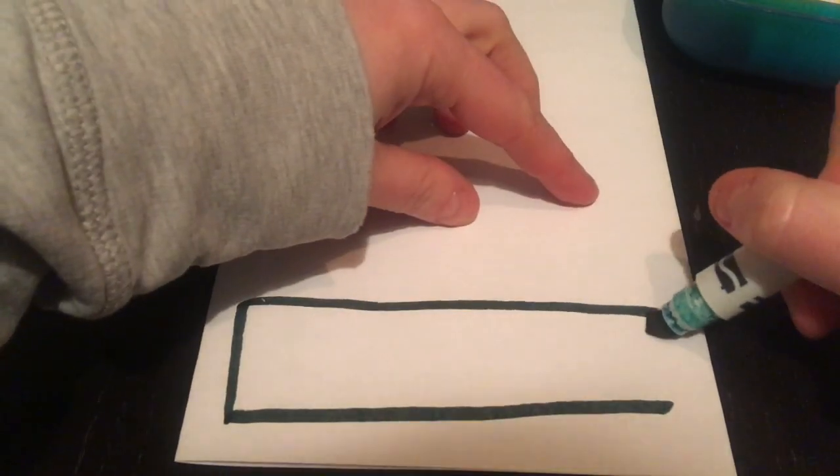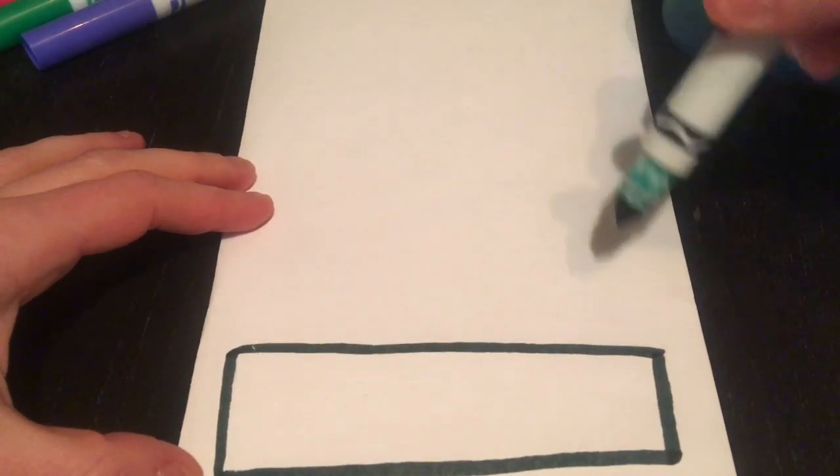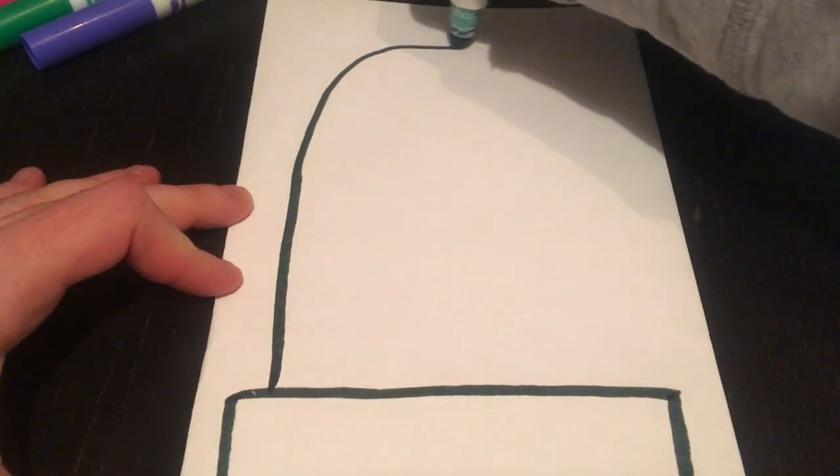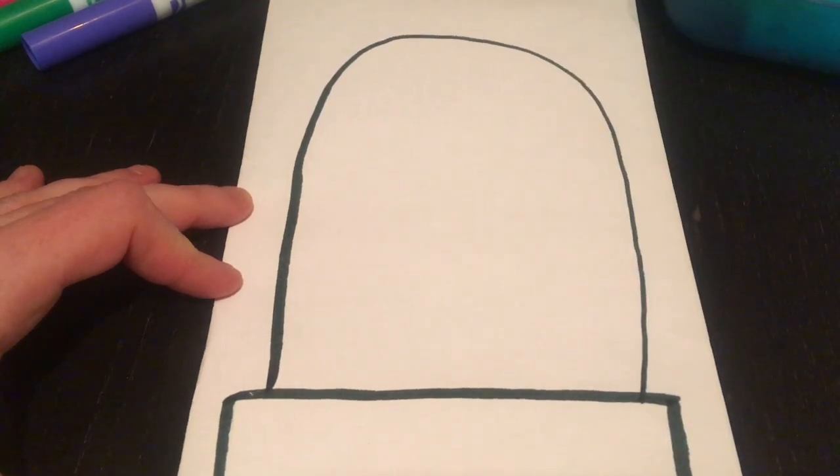Just like this. Two short sides, two long sides. Then you're going to draw a really big stretched out rainbow. Just like that.